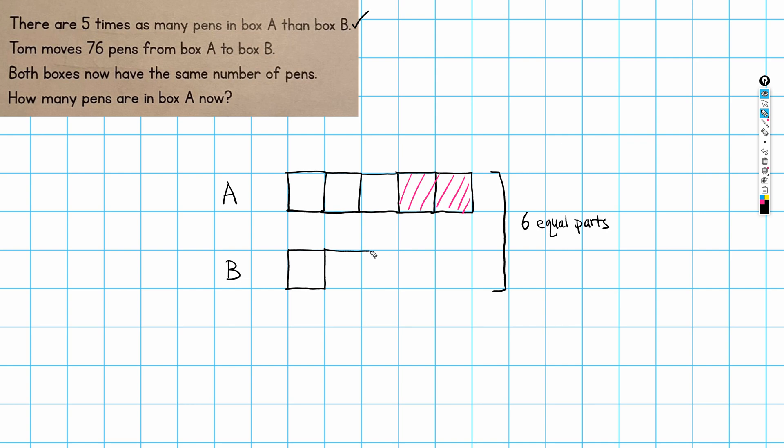So that means that what is moved from box A are two parts. Okay. So that goes to box B. So this is what comes from, so this is from A. All right. There we go. So that's what was moved. And what else do we know? We know that those two parts had a value of 76.